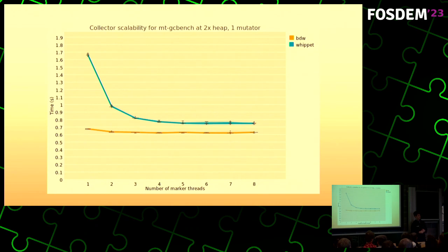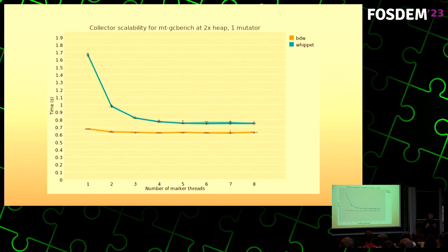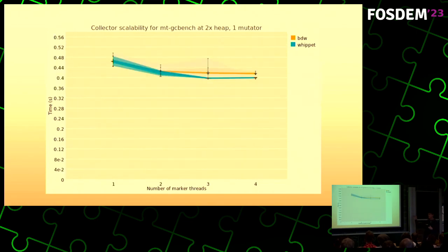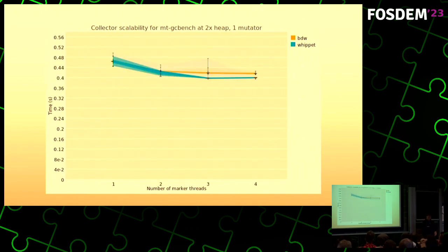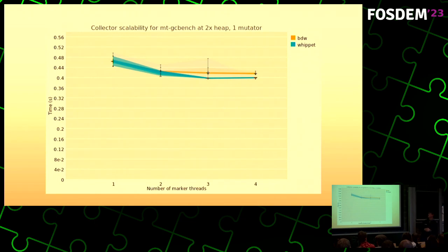This is my humility slide, showing Whippet being slower than BDWGC on one machine. I have no idea what's going on because I re-measured it on another machine and it looks much better. But it does point out that as you add marker threads, things improve. With twice as much memory as the problem takes, as we add markers, things get better for both BDW and Whippet, but a little bit better for Whippet.